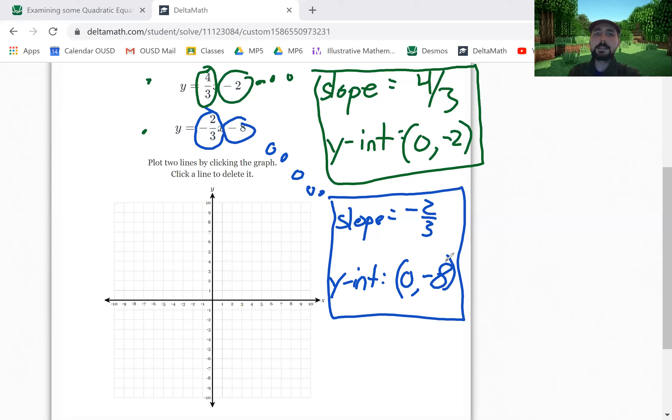Okay, so once you've identified those parts of your formula, you can start graphing. For the green line first, the one that I have in green, I start by looking at the y-intercept of 0 comma negative 2. On DeltaMath I can just click on that point.